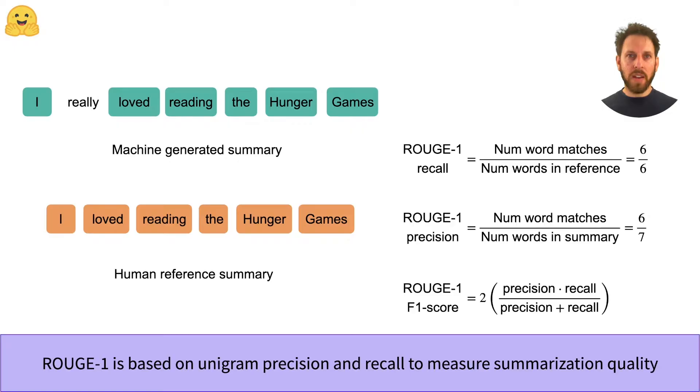Now, perfect recall sounds great, but imagine if our generated summary had been something like, I really, really, really, really loved reading The Hunger Games. This would also have perfect recall, but is arguably a worse summary since it is verbose.